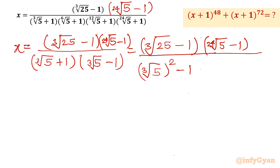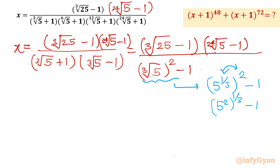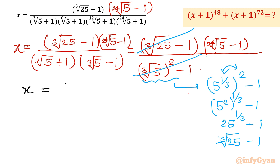Now you can see the denominator. It is 5 to the power 1 over 3 whole squared minus 1. Using the exponent property, I can swap exponents and write 5 squared whole cube root minus 1, which gives the cube root of 25 minus 1 — which is exactly the numerator. So these two terms cancel. The ultimate reduced form is: x equals 24th root of 5 minus 1.